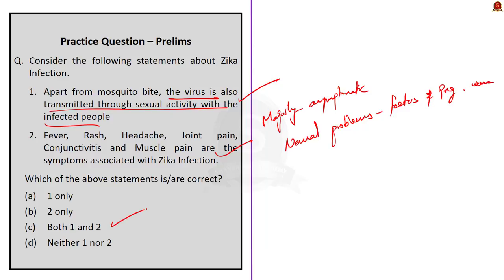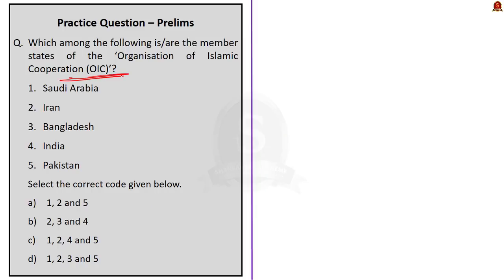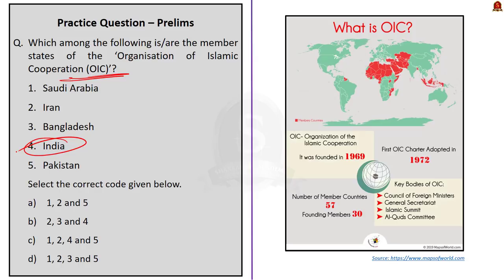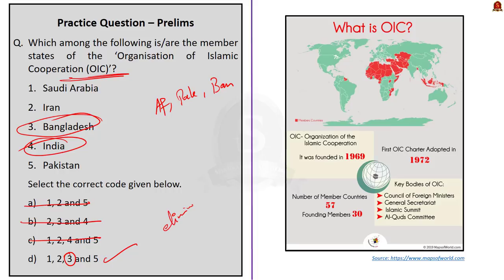Moving on to the next question about OIC: which of the following are member states of OIC? We have five countries in the list. From our discussion, India is not a member of the OIC, so we eliminate options B and C. Our neighbors like Afghanistan, Bangladesh, and Pakistan are all members. Any option containing Bangladesh will be the right answer. Among options A and D, only option D has Bangladesh — so the answer is option D, which is one, two, three, and five. We arrive at it using the elimination technique. Here is a map and infographic about the OIC for students to have a look at.